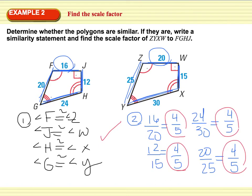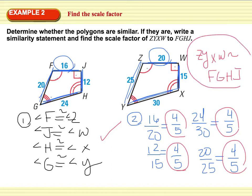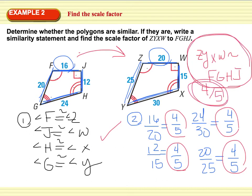So our answer is: ZYXW is similar to FGHJ. The scale factor is 4 over 5. We have two answers: the similarity statement, which states that this quadrilateral is similar to that quadrilateral, and the scale factor.